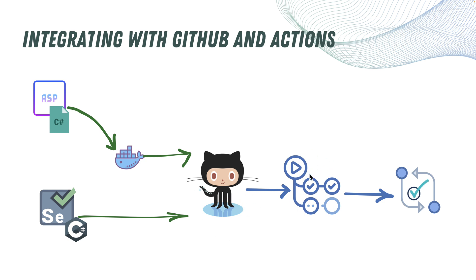That is something we need to do in this particular section. You will see that we will not have a silo project for the application and a silo project for the test — we are going to bring both together in one single project repo. This is what really happens in the actual real-world use case, where your application and your tests sit together so they can be executed on each and every commit in the CICD pipeline.